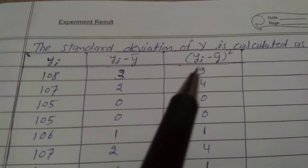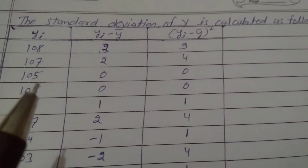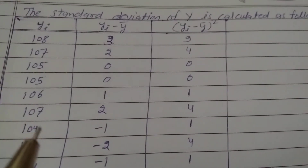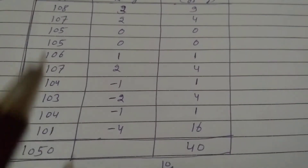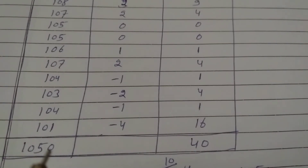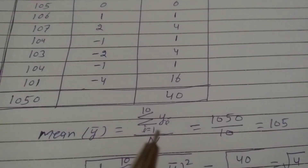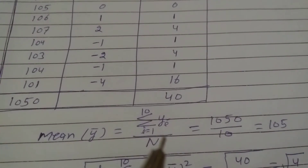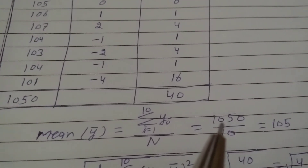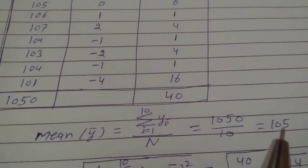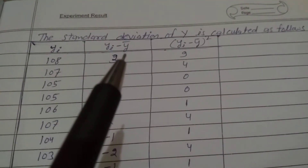Standard deviation of Y is calculated. Yi values: 108, 107, 105, 105, 106, 107, 104, 103, 104, 101. Their summation is 1050. Mean Y-bar equals summation from i=1 to 10 of Yi upon capital N, total observations 10, so Y-bar equals 1050 upon 10, which equals 105.